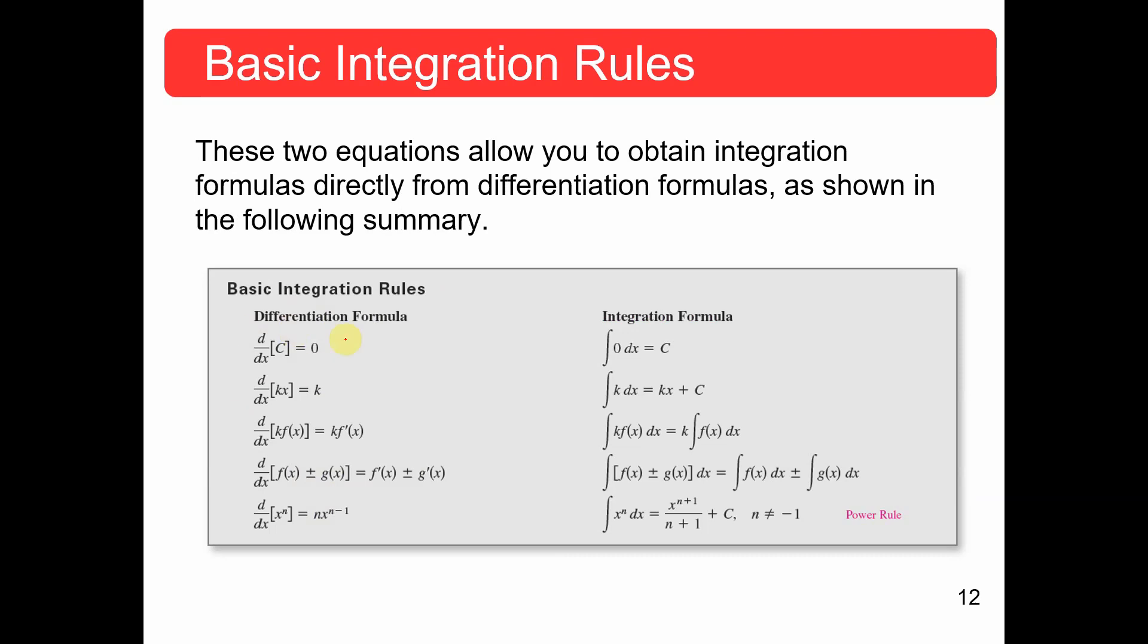Let's look at our basic differentiation rules. The derivative of a constant is zero, therefore the integral of zero is a constant. These are just backwards of each other. The derivative of kx is just k because you take the number in front of x, which means that the integral of k equals kx plus c.